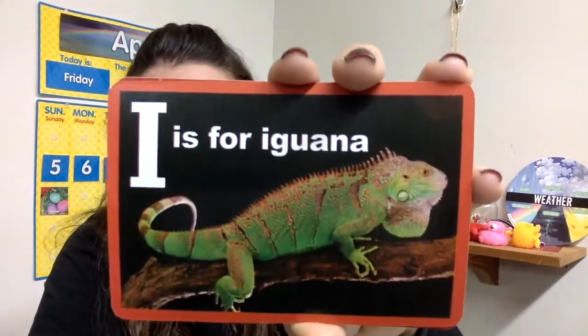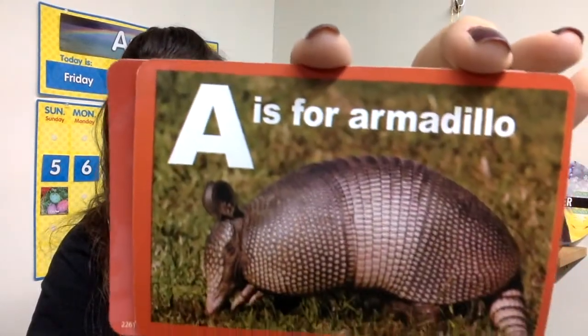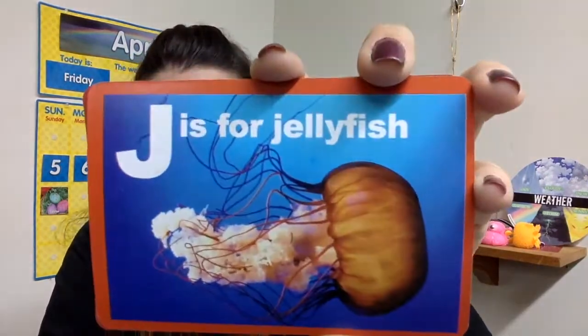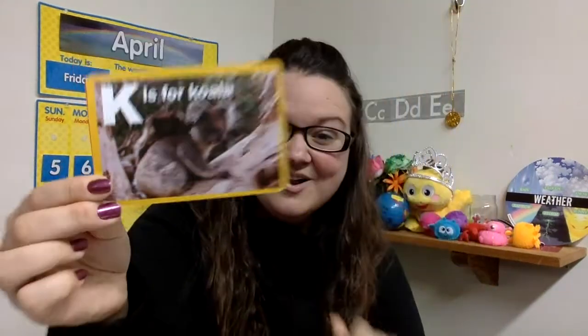I says i. I is for iguana. Iguana. A says a. A is for armadillo. J says j. J is for jellyfish. Jellyfish. K says k. K is for koala. Koala.